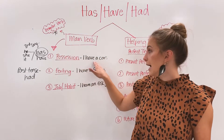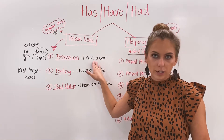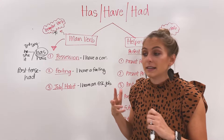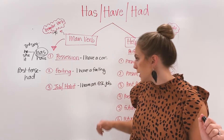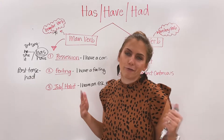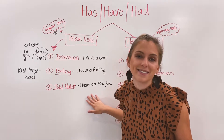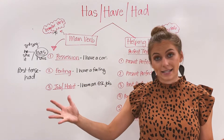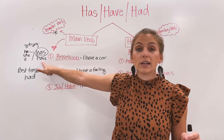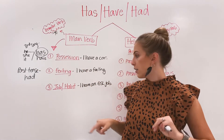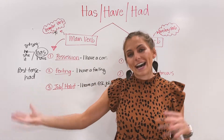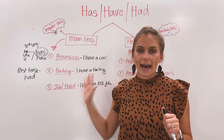For example: I had a car last year, but I sold it. I had a suitcase, but I gave it to my friend. I had a feeling yesterday that it was going to rain. I had a job, but I quit. So you can use had to talk about the past tense. For the main verb, we use has or have in present tense for possession, feeling, job, or habit, and had for past tense.